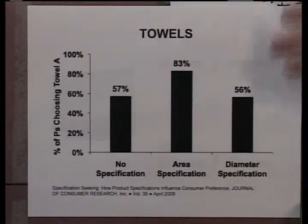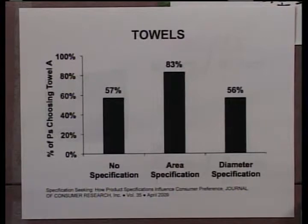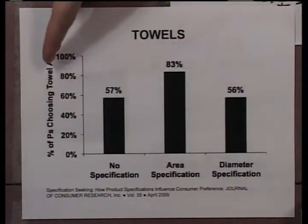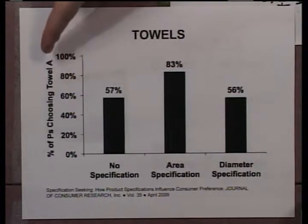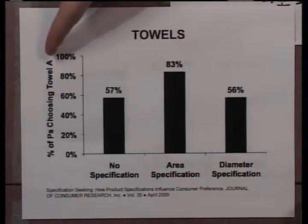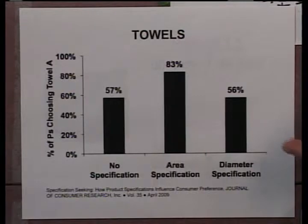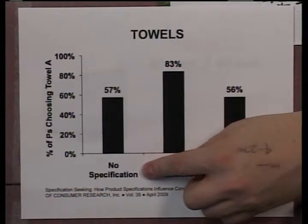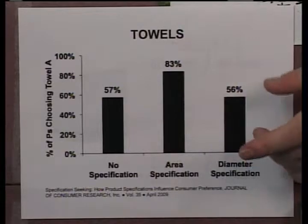Then you ask these different subject groups, when they're done, which towel they prefer. Towel A was the brown towel — these are towels that they pick. On this axis we've got the percentage of everybody who picks the brown towel — the not-as-pretty, softer towel. Now, of the three cases, the first case is where there was no specification, so you didn't ask them to make comparisons on a certain dimension. But then the other cases are where things get really interesting.